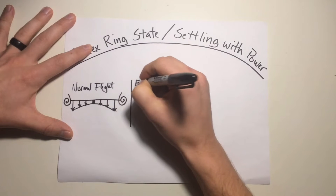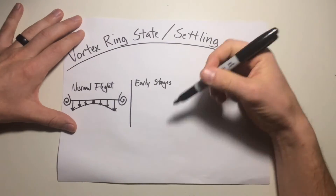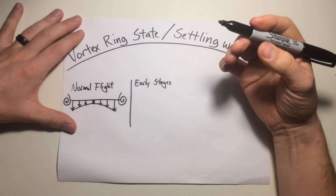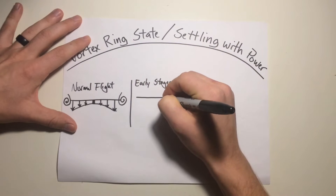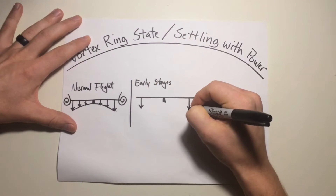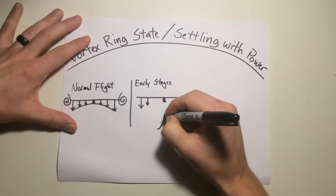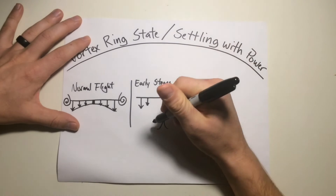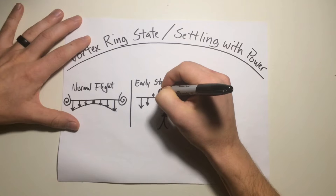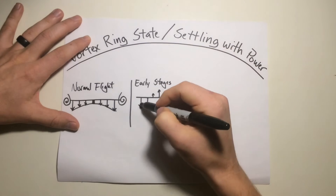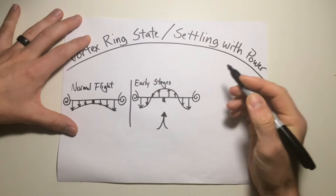As we start to get into the early stages of settling with power, we're going to see a shift in the airflow. The aircraft is starting to enter a steep approach, and you're going to have upward flow of air through the rotor system that potentially changes the airflow around it. With low power applied, we can see that upflow overcoming the effects of blade rotation and pitch angle. Now we're starting to see an upward flow of air near the blade root and a downward flow of air near the blade tips — with our wingtip vortices still on the outside. This is the early stage.